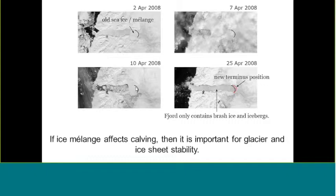We see this pattern of sea ice growth and increase in ice melange rigidity during the wintertime that's associated with a drop-off in calving activity. This is something that we see basically year after year in a number of glaciers around Greenland. So if ice melange affects calving, then it is important for glacier and ice sheet stability due to non-linear effects associated with calving and how that affects ice sheet drawdown.